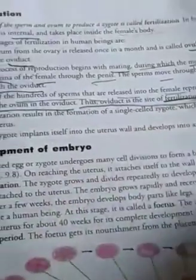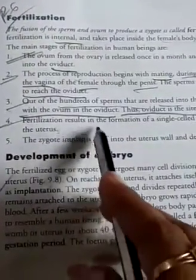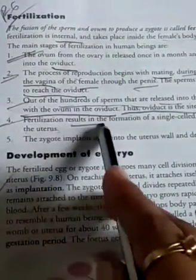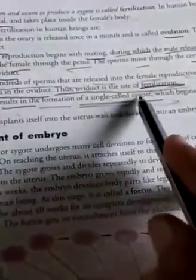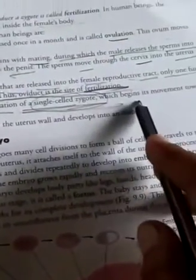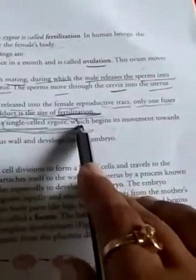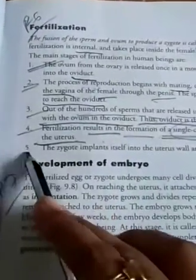The second name of the oviduct, as we know, is the fallopian tube. Fertilization results in the formation of a single-cell structure known as the zygote, which begins its movement towards the uterus.